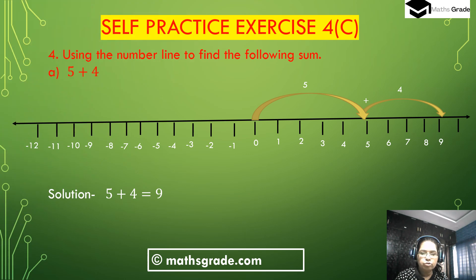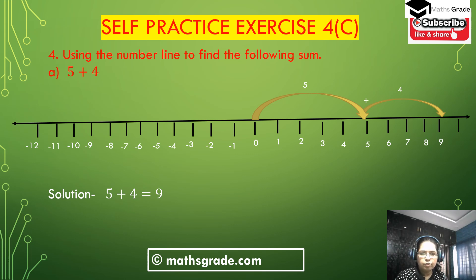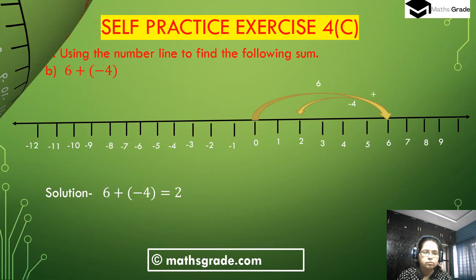Now we solve question number 4. Question number 4 is: using the number line to find the following sum. First bit (a) is 5 plus 4. Both are positive integers, so starting from 0 the number goes to the right to 5. Then from 5, going 4 more places: 5 to 6 is 1, 6 to 7 is 2, 7 to 8 is 3, 8 to 9 is 4. The number is now at 9, so 5 plus 4 equals 9.